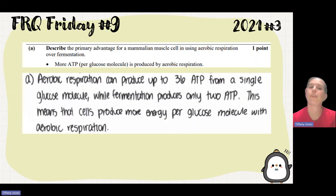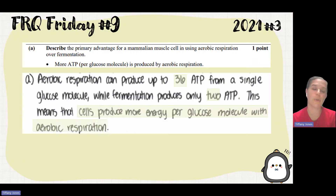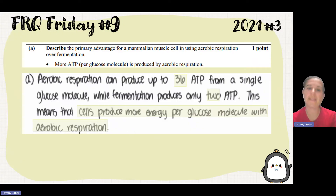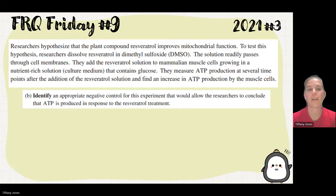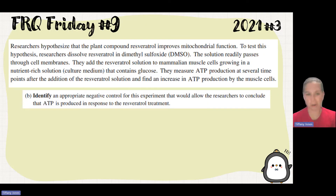Let's see what the student said. Aerobic respiration can produce up to 36 ATP molecules from a single glucose, while fermentation produces only two ATP. This means the cells produce more energy per glucose molecule with aerobic respiration.